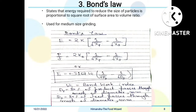Bond's law states that the energy required to reduce the size of particles is proportional to the square root of the surface area to volume ratio. Bond's law is used for medium size grinding. The equation is: E = 2K × (1/√X_P − 1/√X_F), where E is energy, X_P is the average size of product particles in meters, and X_F is the average initial size of feed particles in meters.